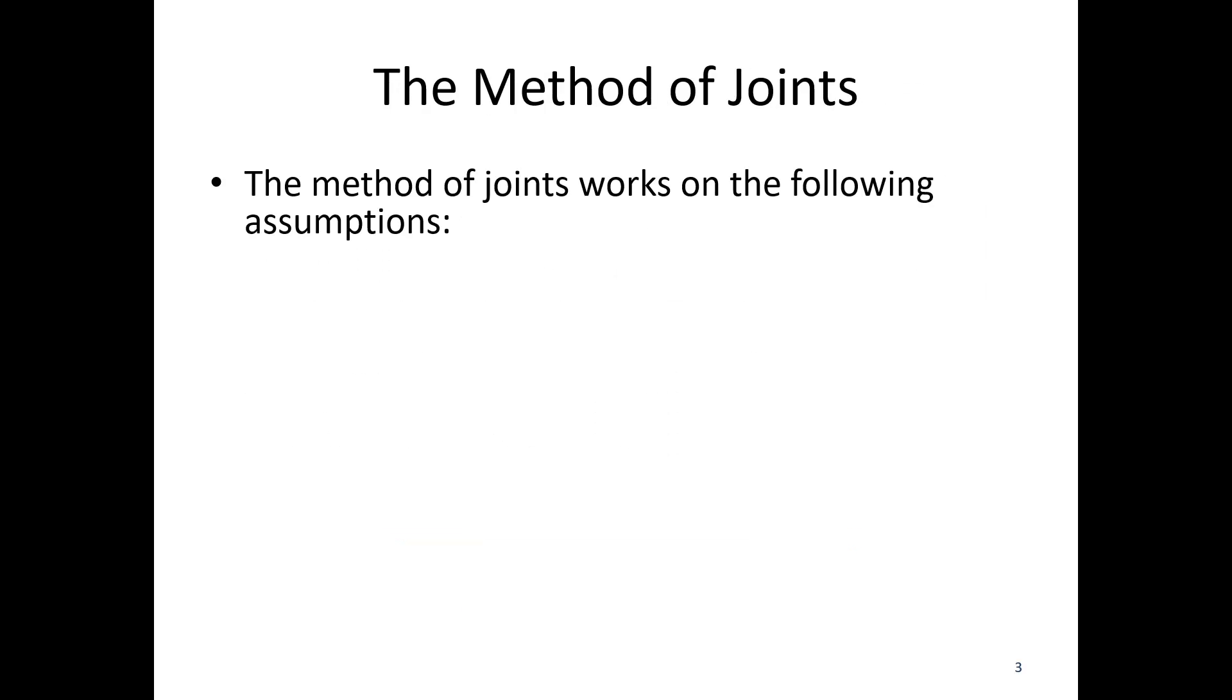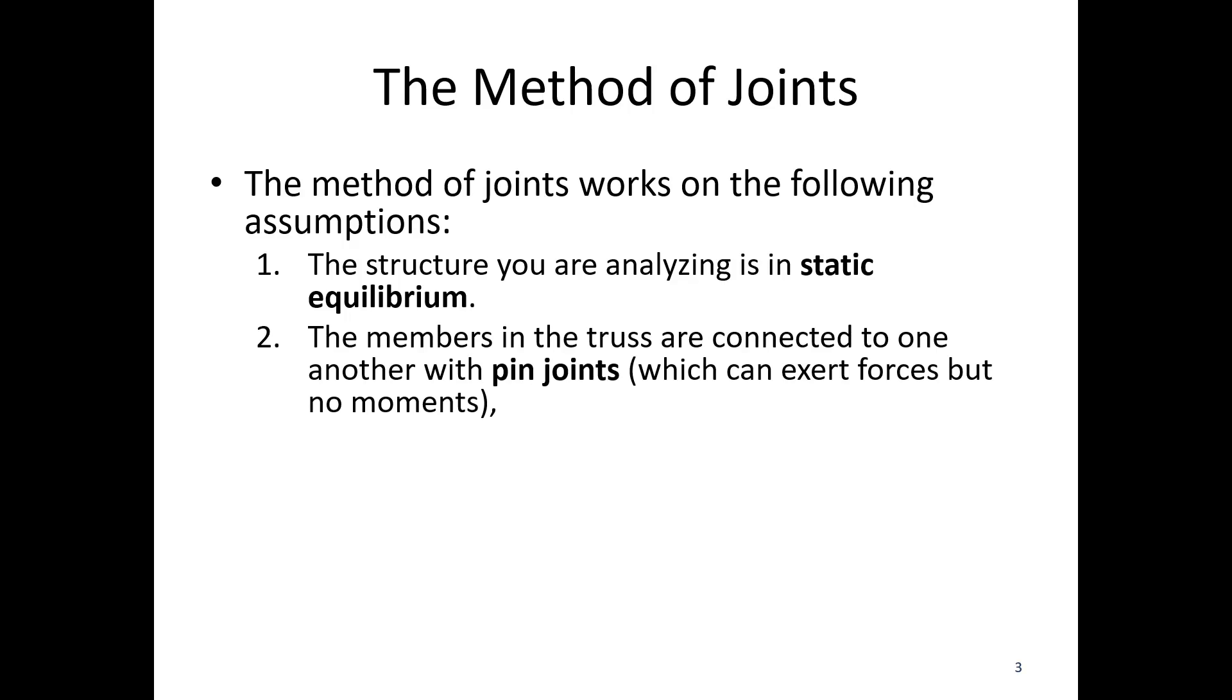And so the method of joints works on the following assumptions. Number one, the structure you're analyzing is in static equilibrium. Number two, the members in the truss are connected to one another with pin joints. And so at these pin joints, we can exert forces but no moments. That's going to be necessary for our two-force members. Number three, the pin in each pin joint is also in static equilibrium.